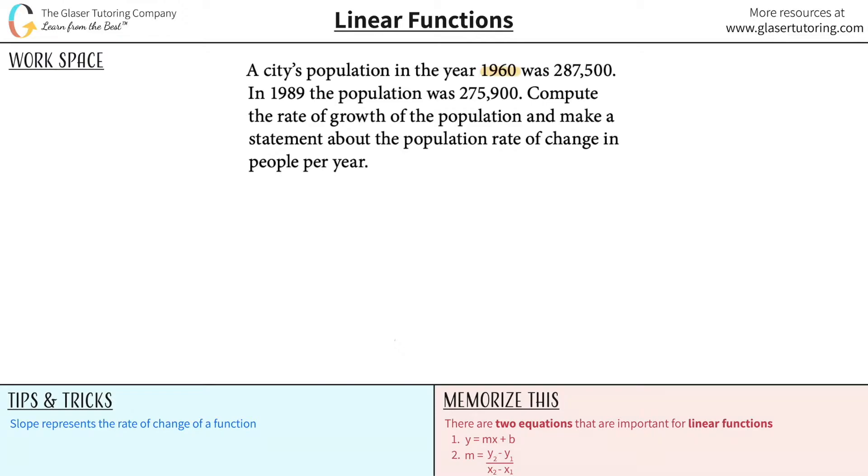A city's population in the year 1960 was 287,500. In 1989, the population was 275,900. Compute the rate of growth of the population and make a statement about the population rate of change in people per year.